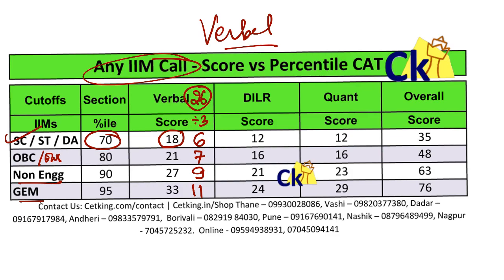If you're very good in verbal and want to target 99 percentile, then you need to get 42 marks, which is 14 questions correct.